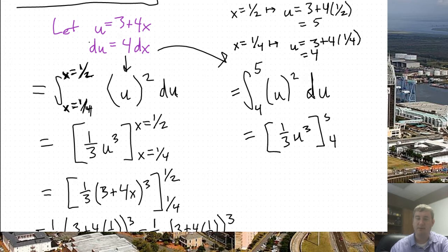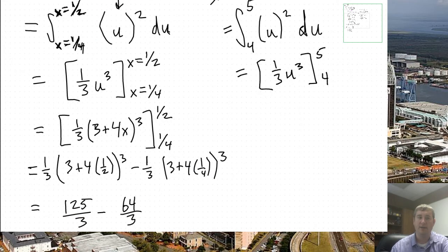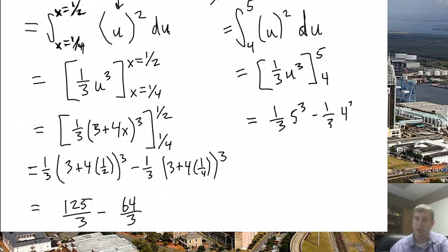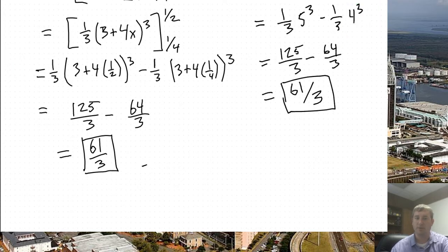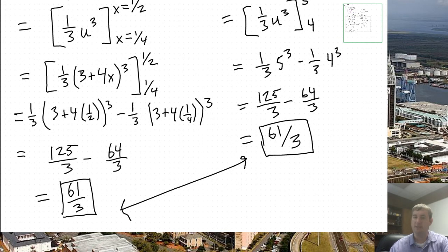But now, since I've already converted my bounds of integration to u values, 4 and 5, I can go ahead and use the fundamental theorem of calculus to plug in 1/3 times 5 cubed minus 1/3 times 4 cubed. And that's the same answer as we got a moment ago, 125/3 minus 64/3. And that is 61/3. So it's the same answer as before, but notice that we got it in a little bit less work. There were fewer lines involved. I think I tend to prefer this second method that I showed you, just converting it into the u values in general. So let's take a look at a couple more problems.